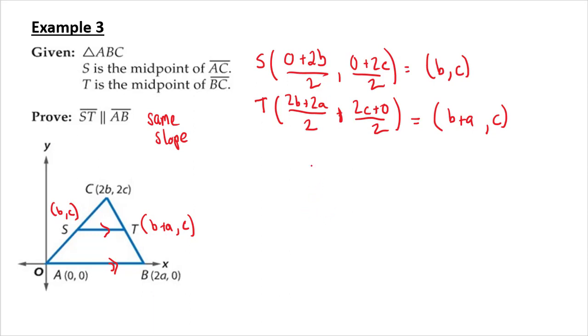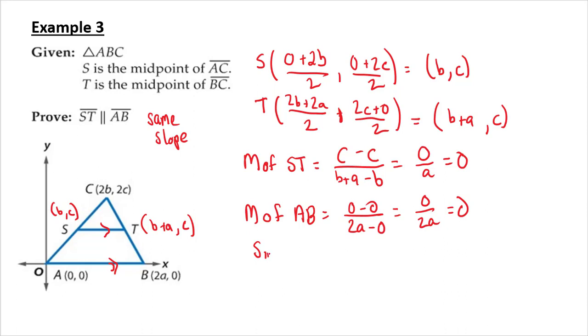So now we want to try and find the slope. The slope of ST. Change in y: C minus C over B plus A minus B, we get 0 over A, which is 0. So now we have 0 minus 0 over 2A minus 0. So I get 0 over 2A, which is 0. And so now we can say since these slopes are the same, ST is parallel to AB.